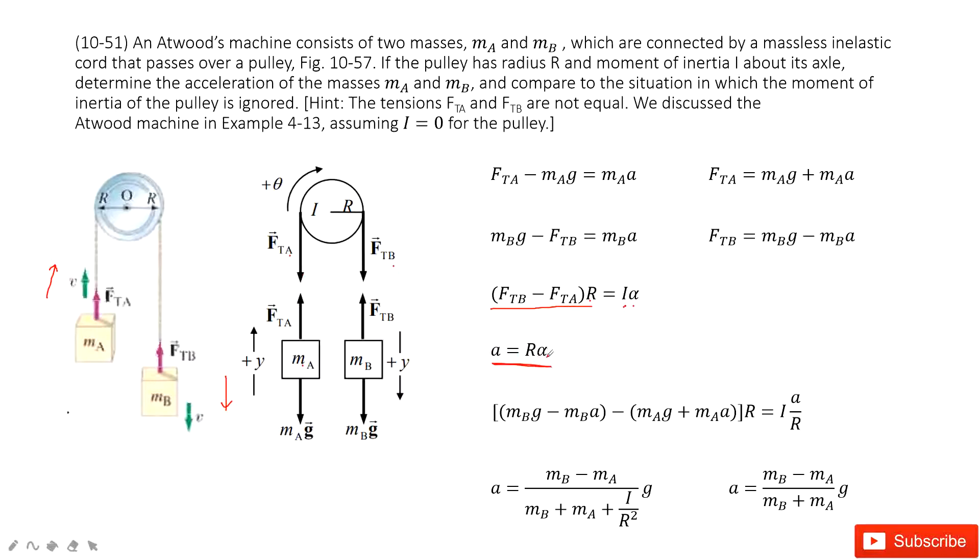Now, we have these two functions to solve the linear acceleration a. If we want to solve it, it looks like we need to find alpha. If we want to find alpha, it looks like we need to find the difference between TB and TA. Is there any way we can do that? Sure.